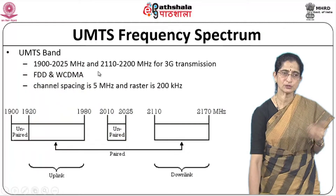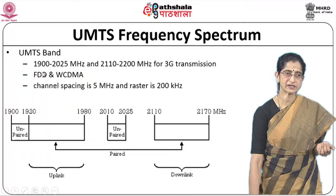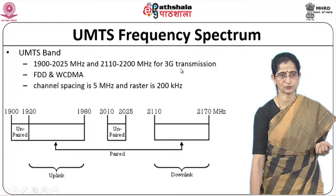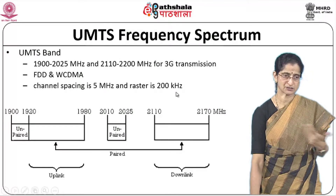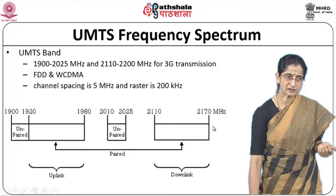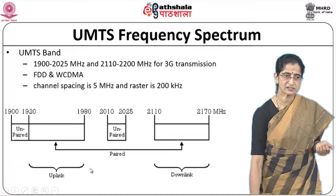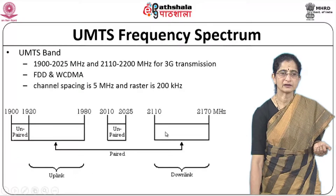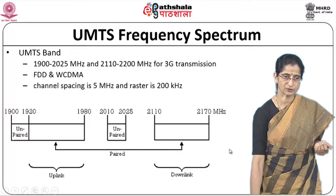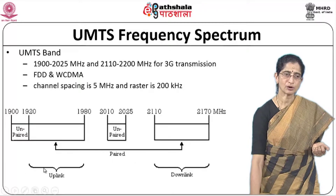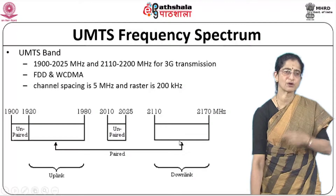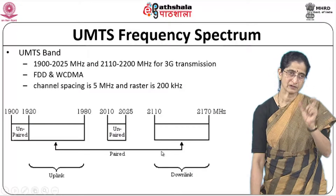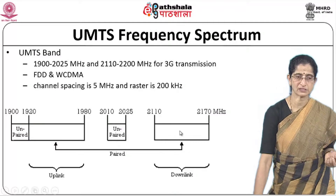Looking at the UMTS frequency spectrum, there are two different bands: 1900–2025 MHz and 2110–2200 MHz for 3G transmission. It uses FDD and WCDMA with a channel spacing of 5 MHz and a raster of 200 kHz. The band 1900–1980 MHz is for uplink and 2010–2170 MHz is for downlink. You can have paired channels — using one frequency for uplink and a corresponding frequency for downlink — or an unpaired band.